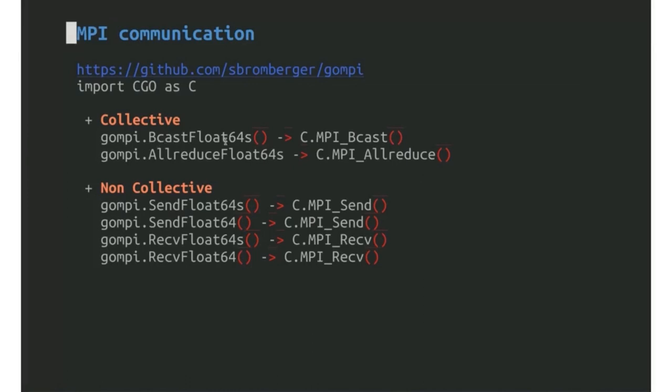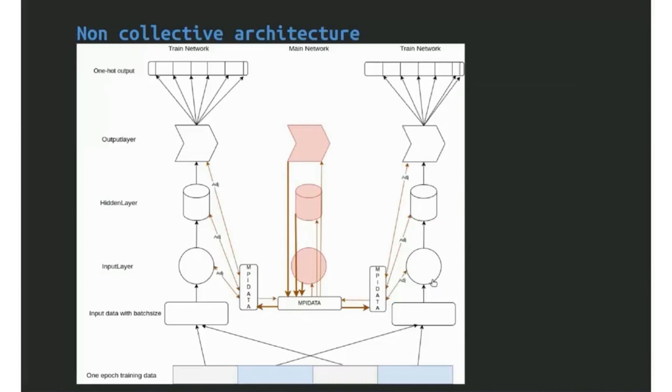Now we come to the MPI communication. I use Go because there was a package in Go for MPI, with functions such as MPI broadcast and MPI all-reduce. Basically these are the only MPI commands I used for my project. You can say this is equivalent to using C.